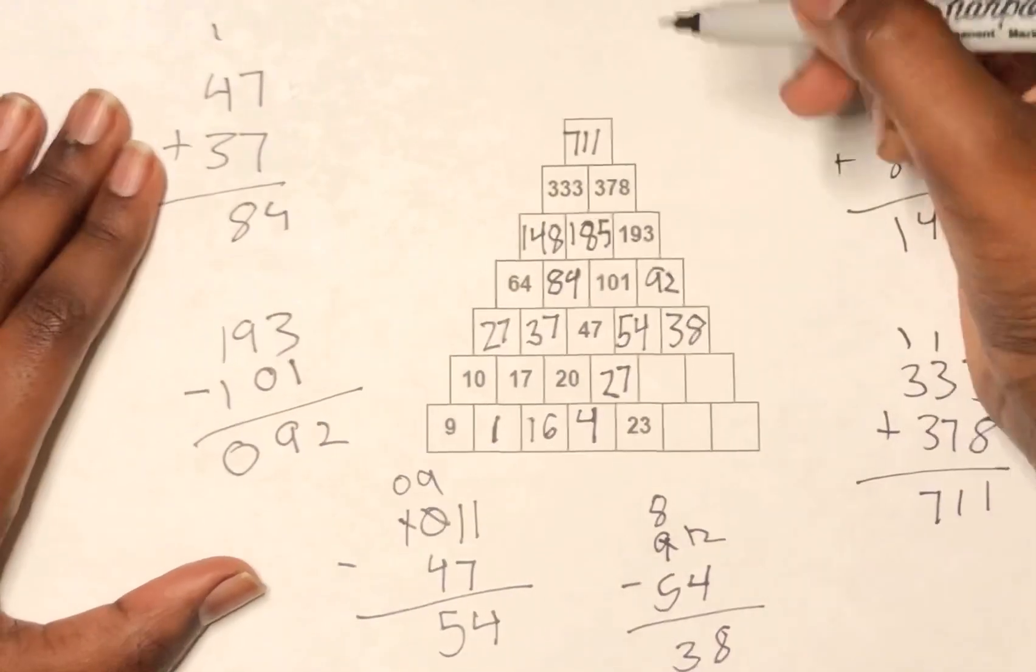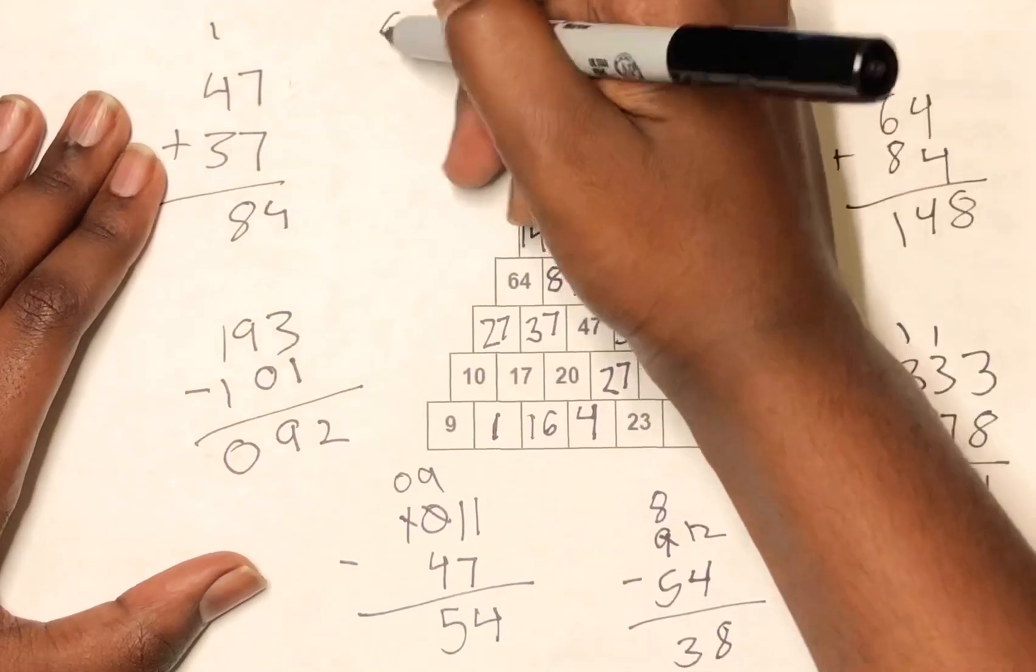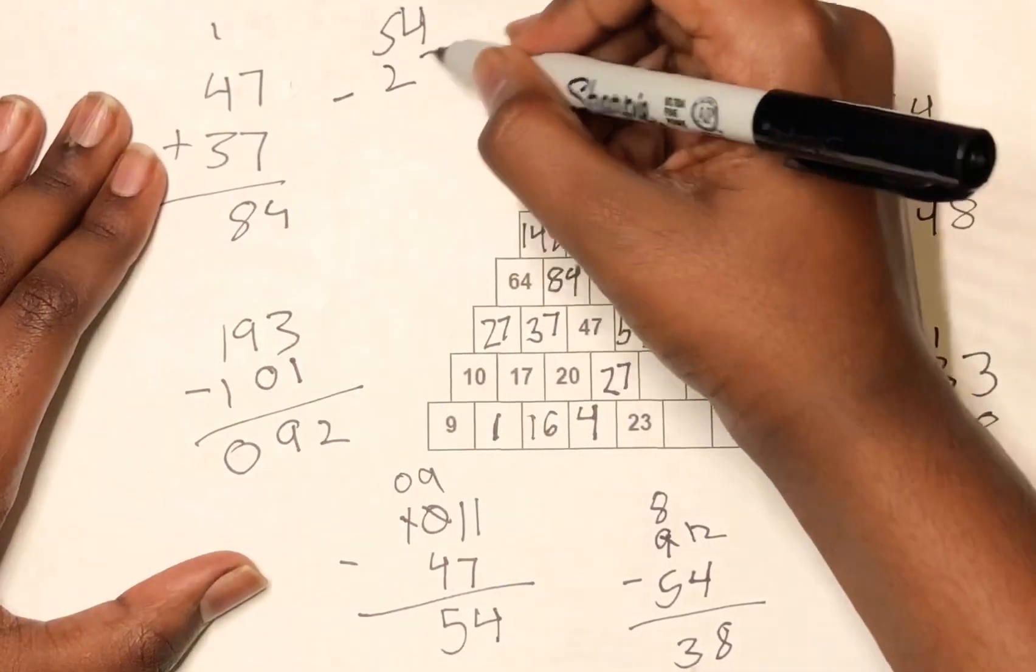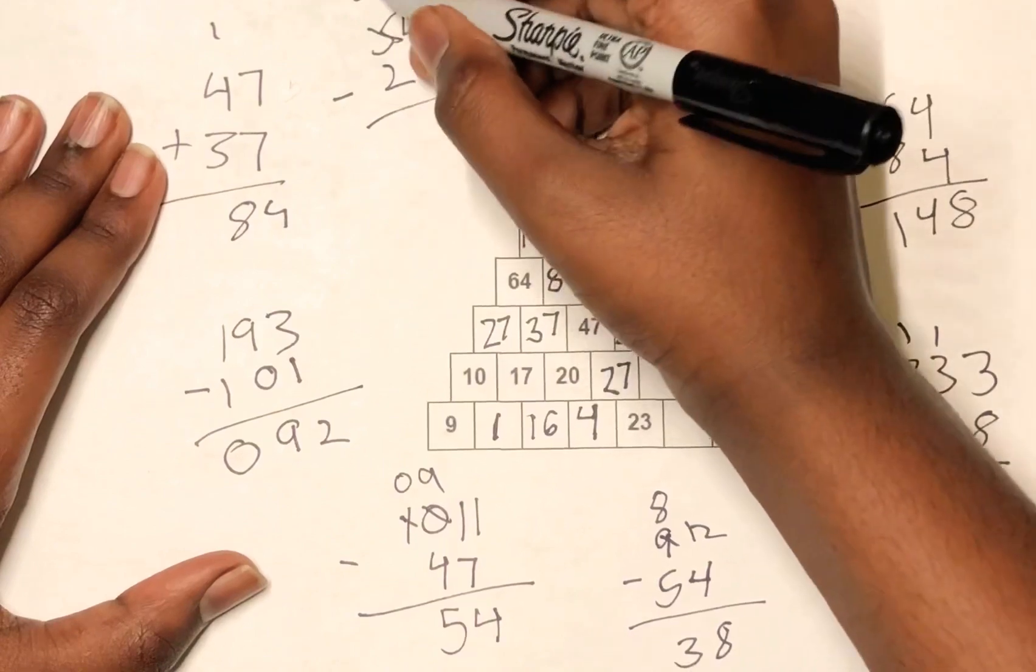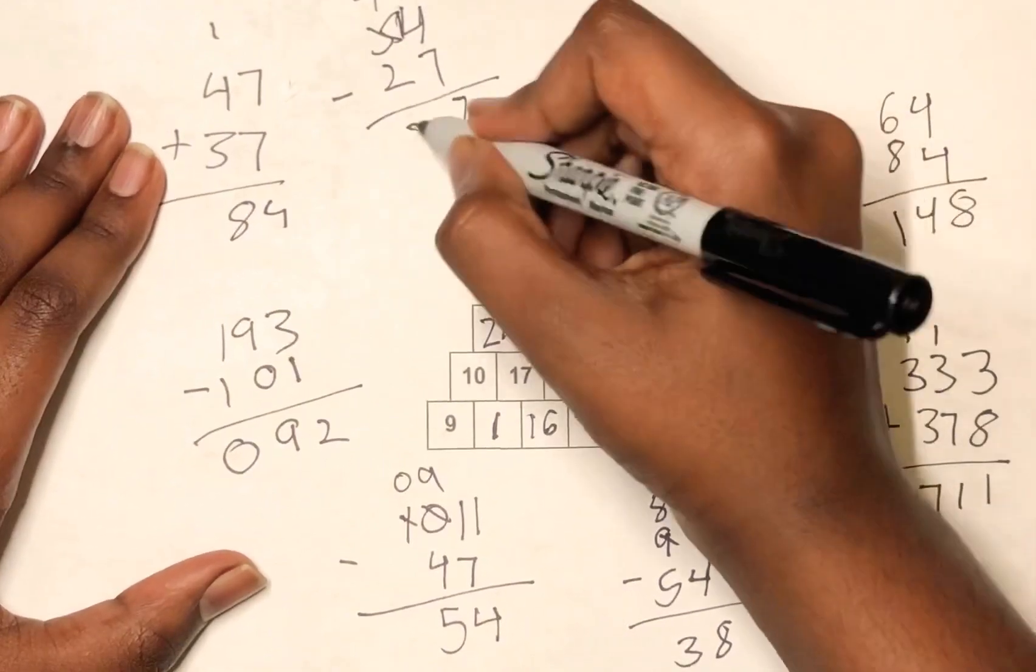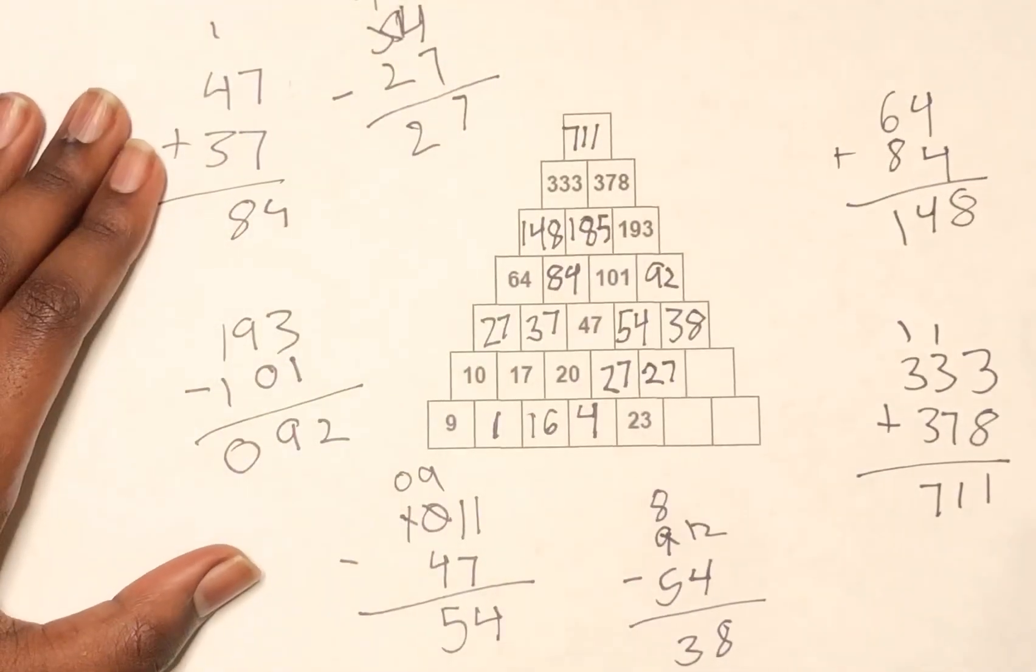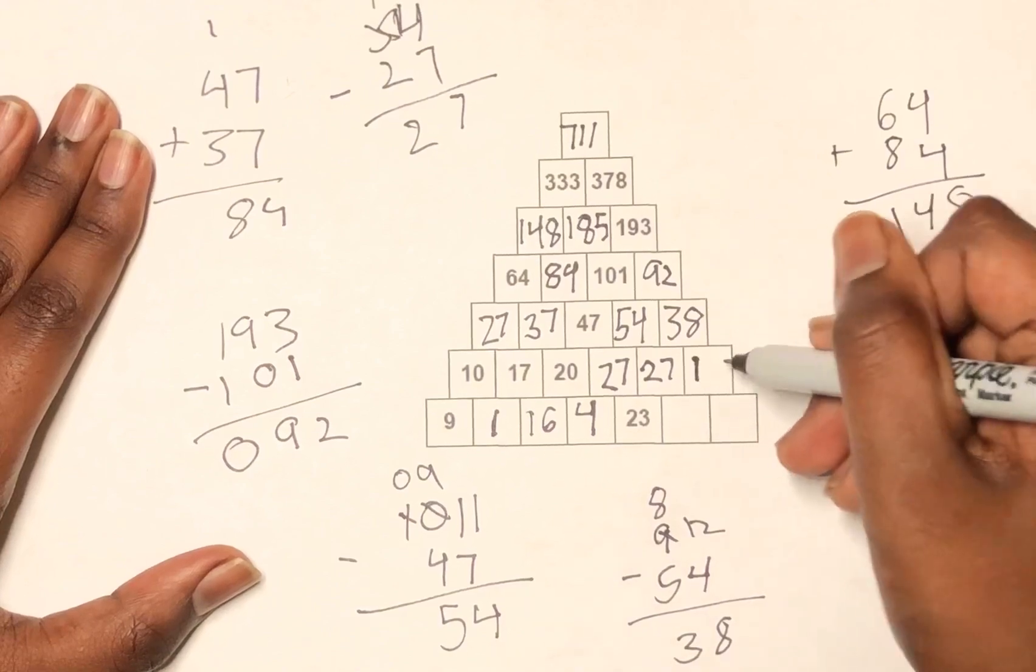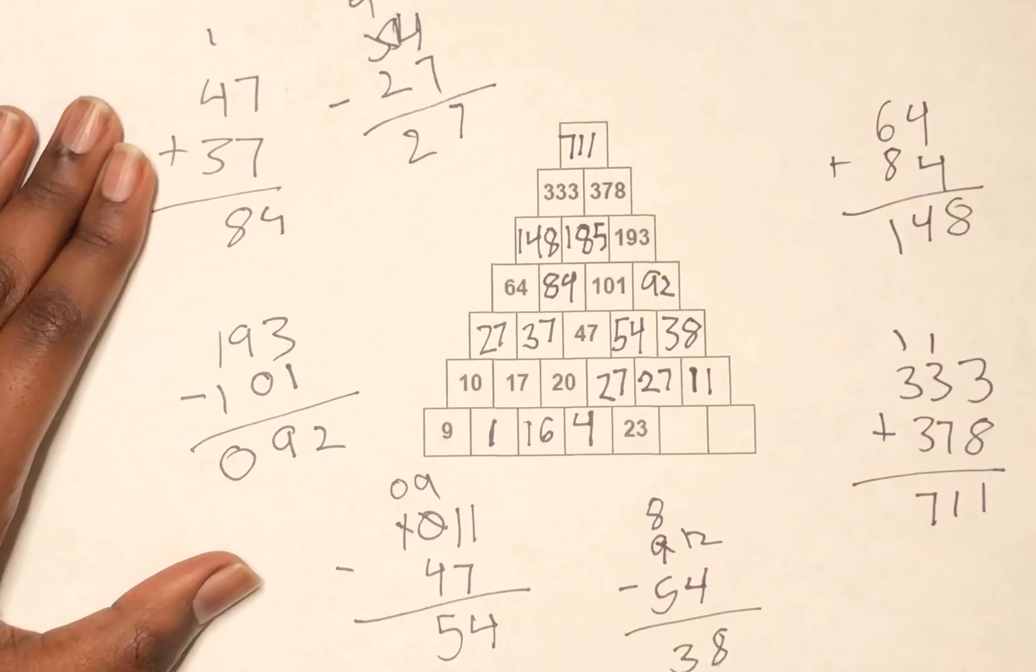So next step is 54 minus 27, because it's right here. And that equals 27. Then you do 38 minus 27, and that equals 11.